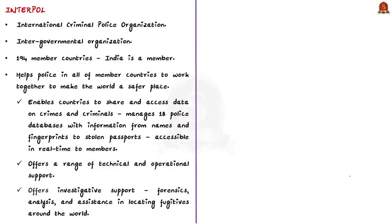What is Interpol? It stands for International Criminal Police Organization. It is an intergovernmental organization with 194 member countries — India is also a member. It helps police in member countries to work together to make the world a safer place. Interpol enables countries to share and access data on crimes and criminals, manages 18 police databases with information from names and fingerprints to stolen passports, and these databases are accessible in real time to members. Interpol also offers a range of technical and operational support like the two new services.